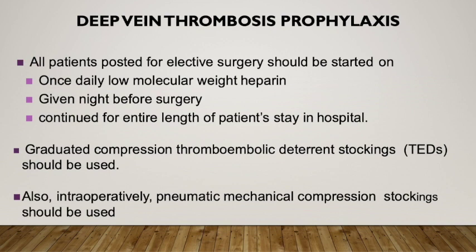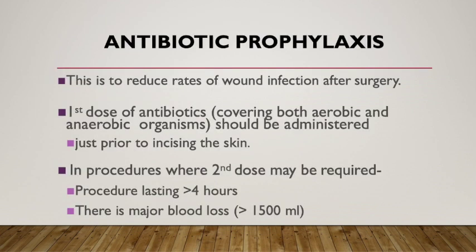DVT prophylaxis is very important — the chance of DVT in prolonged surgery is high and can cause mortality. All patients for elective surgery should be started on once-daily low molecular weight heparin, given the night before surgery and continued throughout the hospital stay. TEDD stockings should be used, started preoperatively in the recovery area and continued intraoperatively as well as postoperatively until the patient is mobilized. For antibiotic prophylaxis, the first dose should cover both aerobic and anaerobic organisms and be administered 30 minutes before skin incision. A second dose should be repeated if the procedure lasts more than 4 hours or if there is major blood loss greater than 1500 ml.